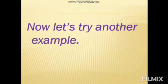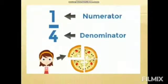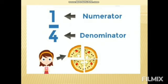Now let's try another example to make our concepts more clear. Let's try another pizza. This pizza has four equal parts. So here in the fraction, four is the denominator because the denominator tells us the total number of equal parts. Simmi got only one part, so the numerator will be one. The fraction will be one out of four, or we can say one fourth.